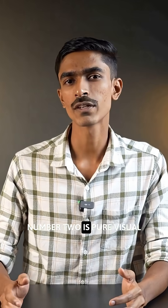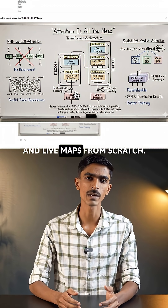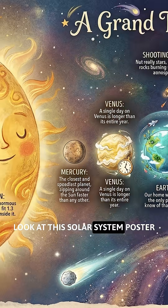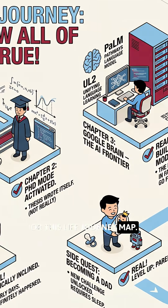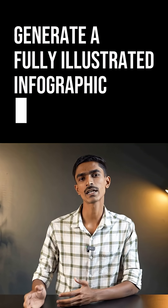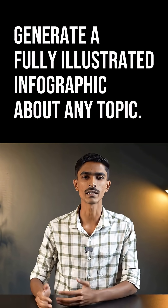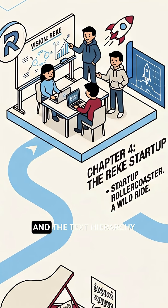Number 2 is pure visual magic — generating complex scientific charts and life maps from scratch. Look at this solar system poster or this life journey map. Just prompt: generate a fully illustrated infographic about any topic. It handles the layout, the icons, and the text hierarchy automatically.